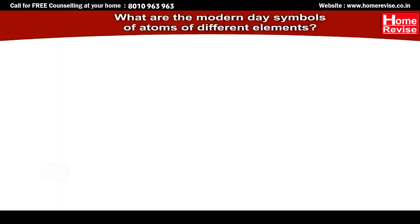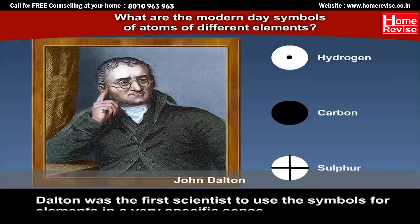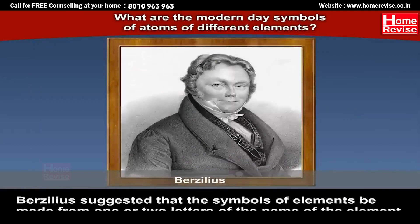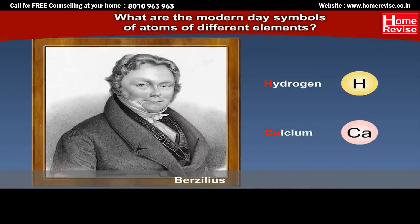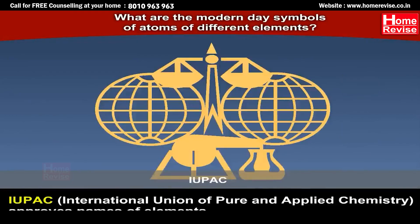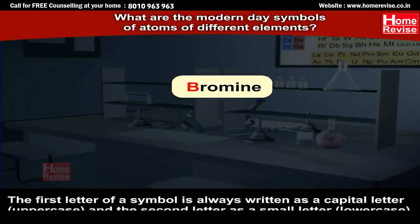What are the modern-day symbols of atoms of different elements? Everybody has a name, and even atoms should have names. Dalton was the first scientist to use symbols for elements in a very specific sense — that the symbols of elements be made from one or two letters of the name of the element. IUPAC, the International Union of Pure and Applied Chemistry, approves names of elements. Many symbols are the first one or two letters of the element's name in English. The first letter of a symbol is always written as a capital letter and the second letter as a small letter.